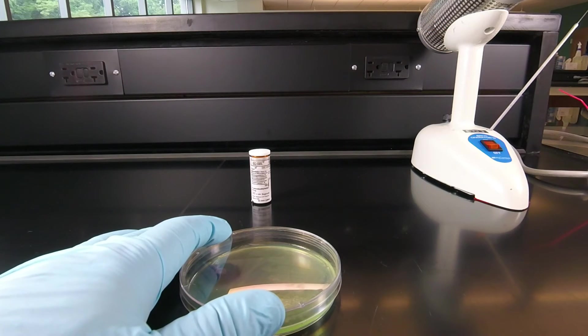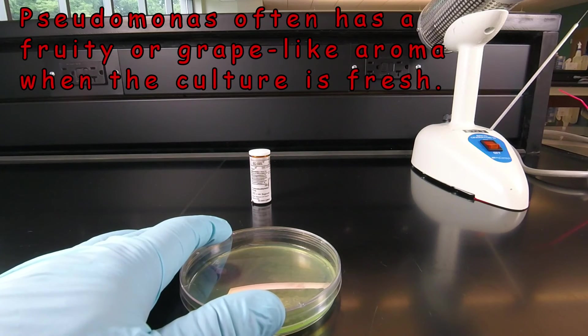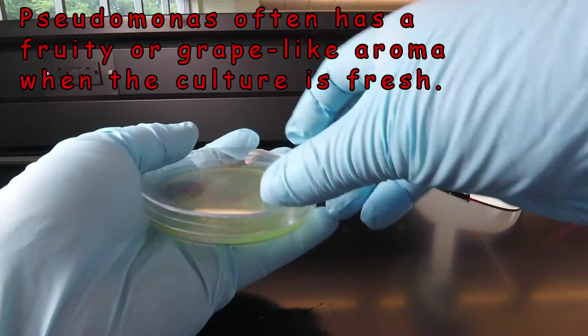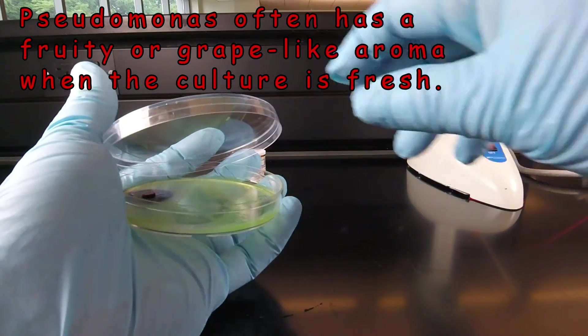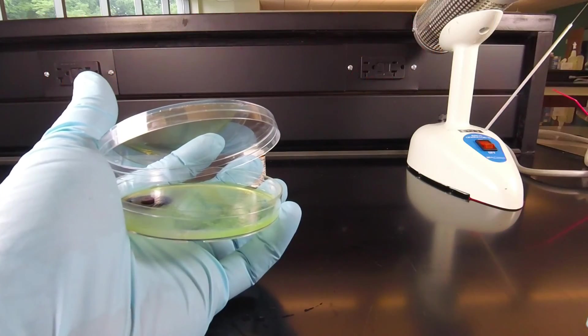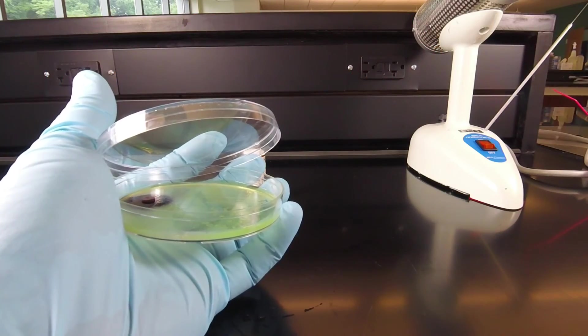Another test that's sometimes done for Pseudomonas is aroma. Pseudomonas produces aminoacetophenone, an aromatic compound that smells kind of sweet or fruity. And the way one tests for that, so no one goes snorting Pseudomonas, is we would lift the lid of the plate, put it up near our nose, and then start fanning air towards our nose and look for that sweet smelling kind of fruity aroma.